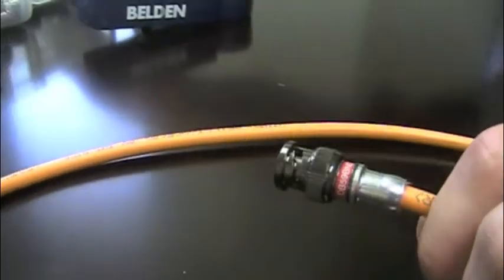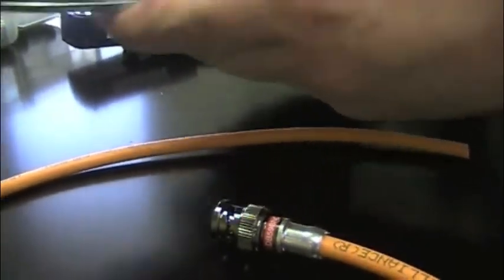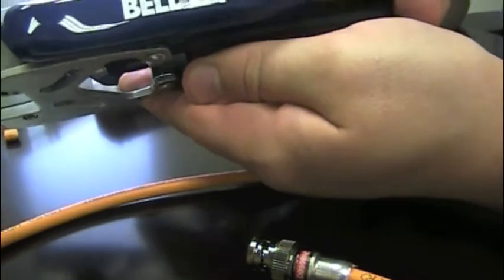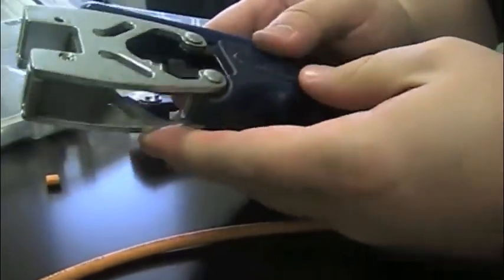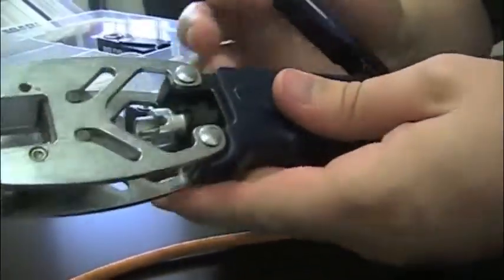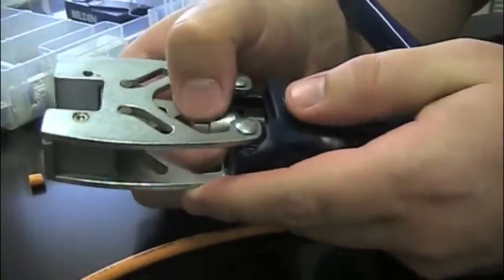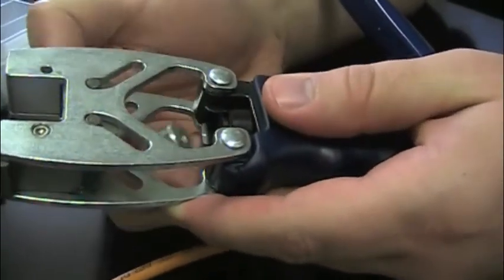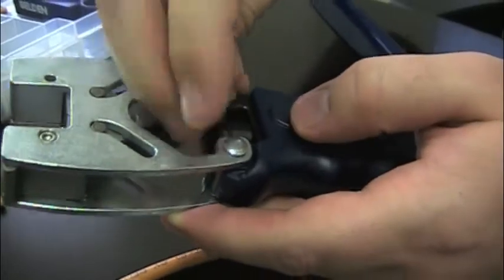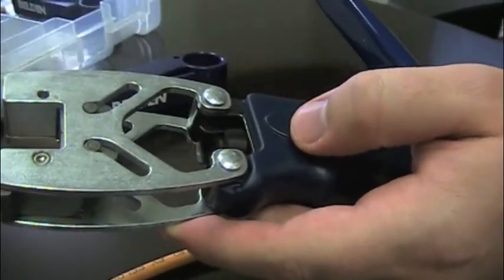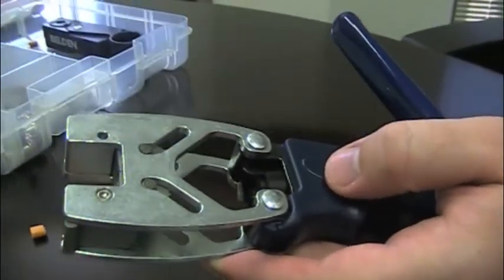The next thing you're going to do is take your compression tool. This is our standard Belden compression hand tool. And what you'll see here is we have the adapter set up for the F-style connector. Well, we're doing a BNC. You don't need that adapter, so we'll go ahead and pop that right out. It's held in there with the little spring clips. We don't need that. We'll put that right back into our case so we don't lose it, along with our stripper.